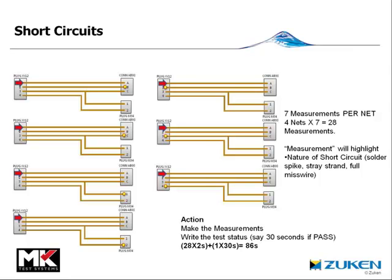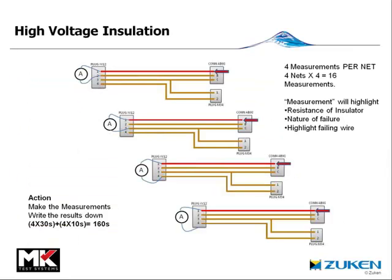Moving on from short circuit tests, the test that is very rarely done with manual testing is high voltage insulation measurement. These are performed to check the health and state of the insulation of each core. Automatic testing would charge each core in turn and measure current leakage into all other cores shorted together — the one-against-all test. By hand, the only feasible way is the old megohmmeter-type test where each core is charged in turn and we measure for current leakage into the other cores one at a time. This process is slow and prone to error, with a minimum of 160 seconds for the high voltage check.